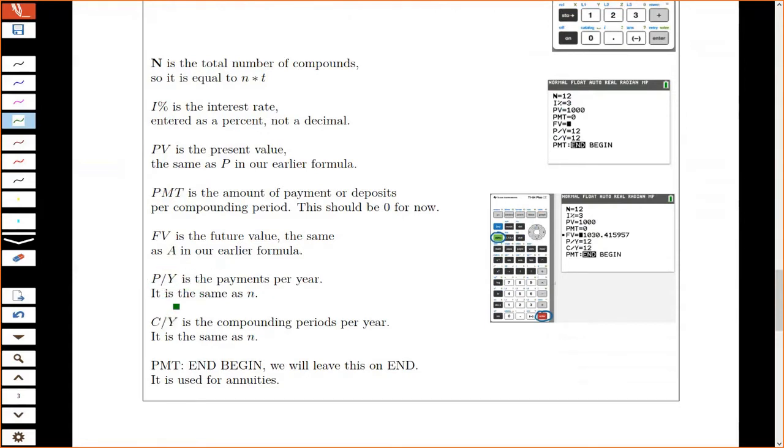Then we have this P over Y and C over Y. In your calculator, it allows you to make these two different things. In this class, we never want them to be different. We always want them to be exactly the same as N. The idea is your calculator allows you to, say, make payments maybe every two weeks when you get your paycheck, but maybe you're only charged interest once a month. You could make these separate, but that's a complexity that we're not going to deal with.